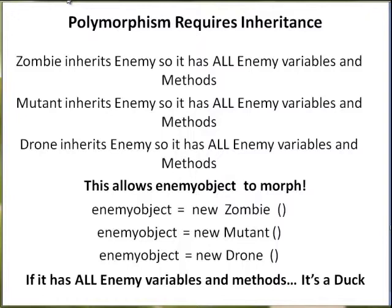The things that zombie, mutant, and drone have in common will happen the same way, and the things that are different — like drones fly — will happen differently for that enemy object variable. Each object, zombie, mutant, drone, has its own variables and methods. So when an enemy object points to a zombie and fire weapons is called, it tries to eat your brain. When an enemy object points to a mutant, fire weapon may swing an axe. When an enemy object points to a drone, fire weapon launches a missile. Every object is sort of two parts: it has what it inherited from the parent, and what it adds to the mix. And that's what allows an enemy object to behave differently.